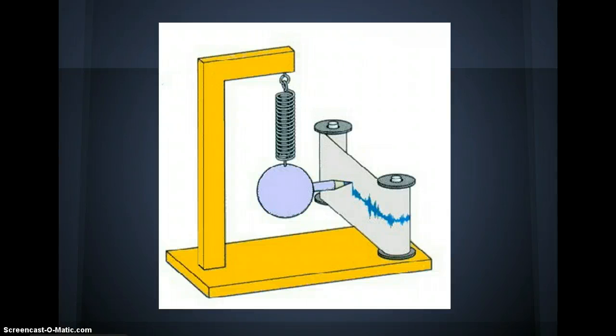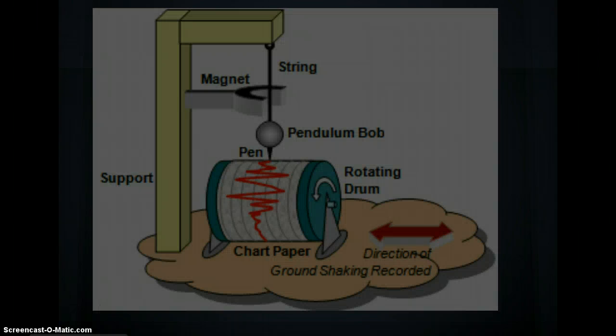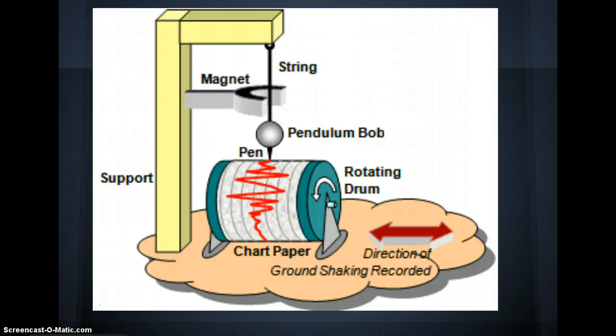Since the pendulum is still, the earth moves the paper back and forth, and the pen writes on it. This shows the wavelengths. A motor pulled the paper across a table that would show the wavelengths over a period of time.